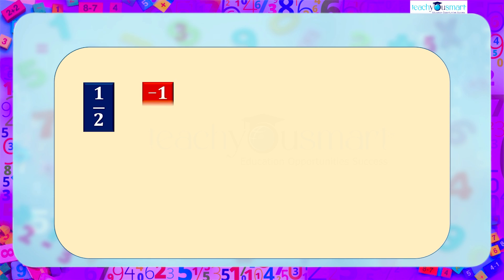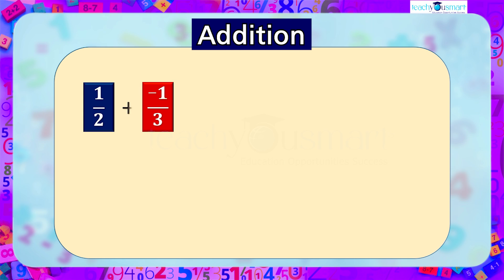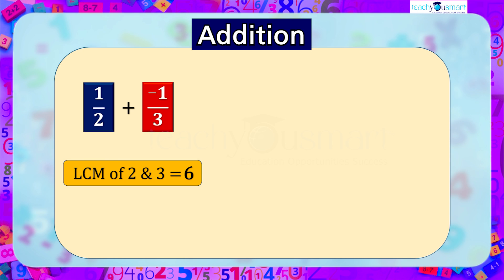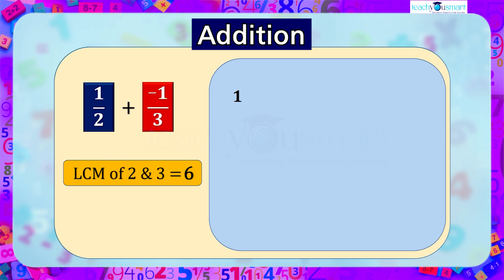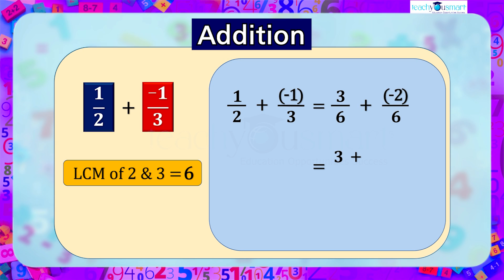Take two rational numbers: one by two and minus one by three. We will start with addition: one by two plus minus one by three. Here the denominators are not same. By taking the LCM of two and three we get six. So one by two plus minus one by three equals three by six plus minus two by six, which equals three plus minus two whole divided by six, equal to one by six.